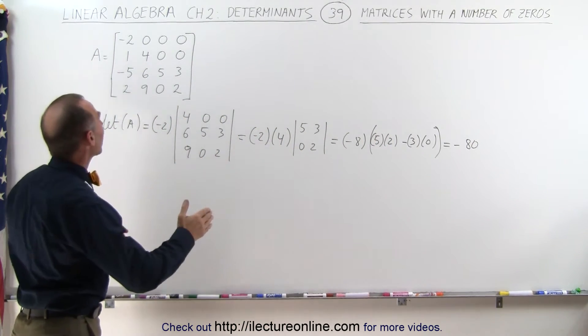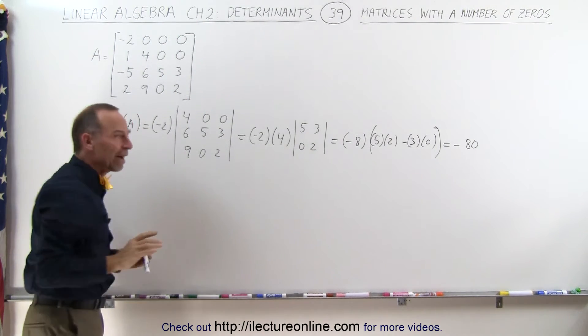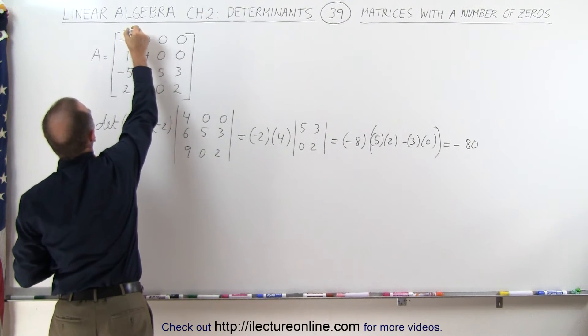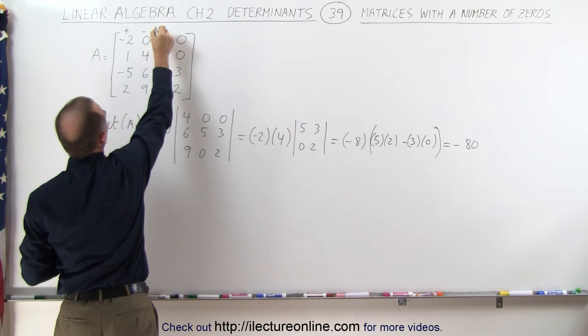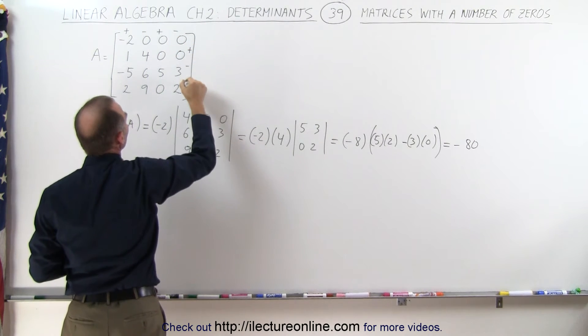Now we're going to do this again, but now we're going to take this column right here. With a 4 by 4 we have to be careful about the signs. Notice that the upper left corner is a plus and it alternates signs. This is a minus, a plus, a minus, and we go around the corner. This is a plus, a minus, and a plus.